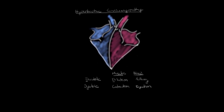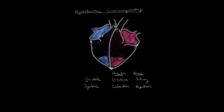As the muscles of the ventricles finish contracting and systole ends, we return to diastole where the muscles relax. Notice that as they relax, before filling begins, not all of the blood from the ventricle was ejected — there's a small amount of residual blood left after systole. The amount ejected over the total blood in the chamber is known as the ejection fraction.